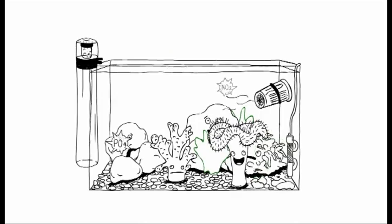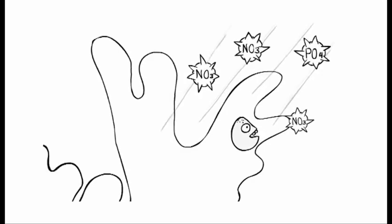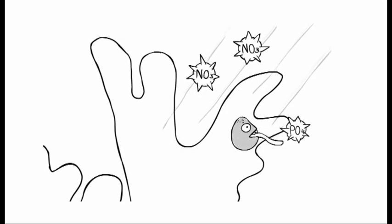But first, we need to understand the role played by the symbiotic zooxanthellae algae in their connection to the energy corals need. Corals host millions of tiny zooxanthellae algae inside their soft tissue. The symbiotic relationship is simple: zooxanthellae are photosynthetic algae and use light energy to metabolize the carbon, nitrogen, and phosphorus waste products of the coral.